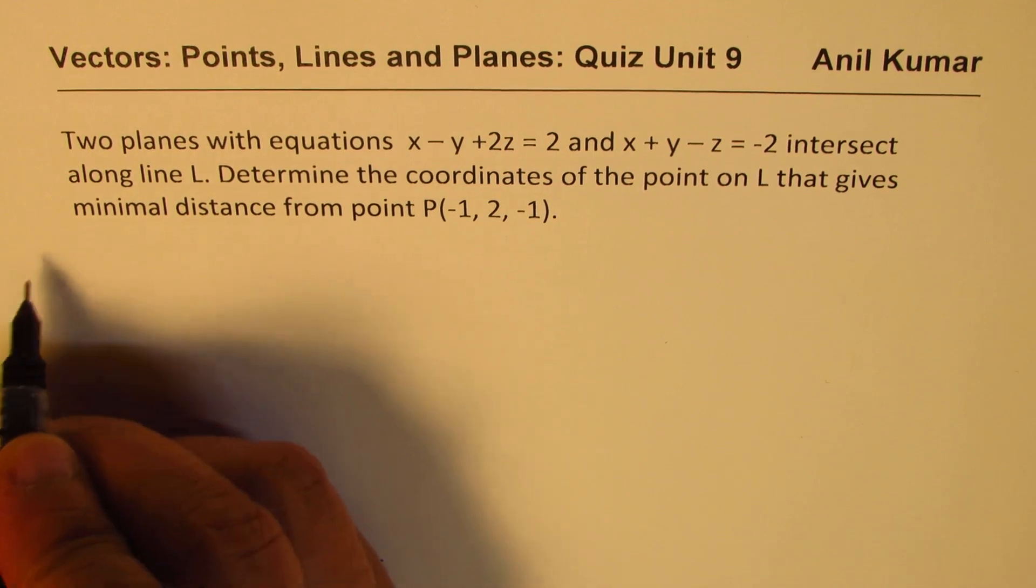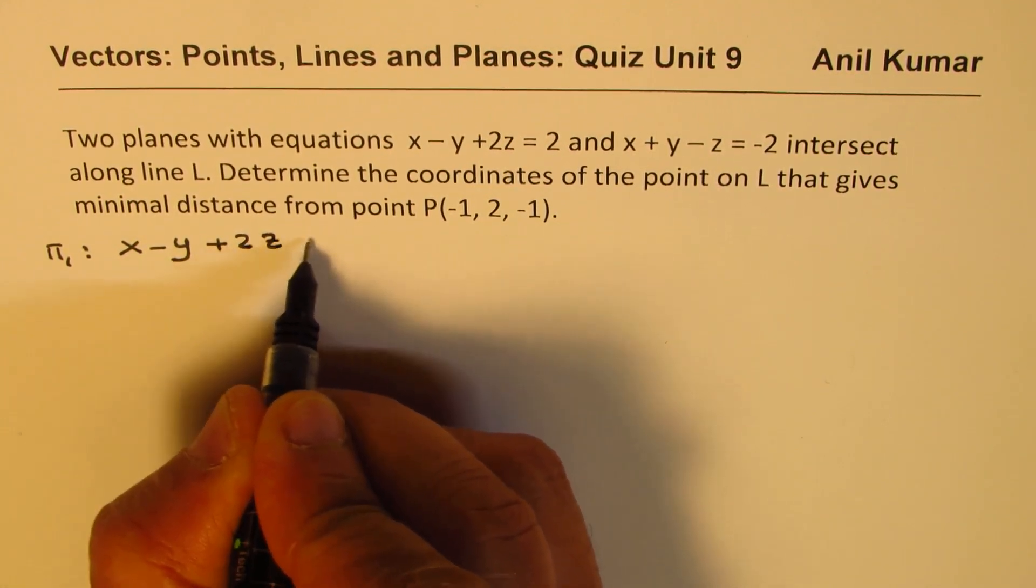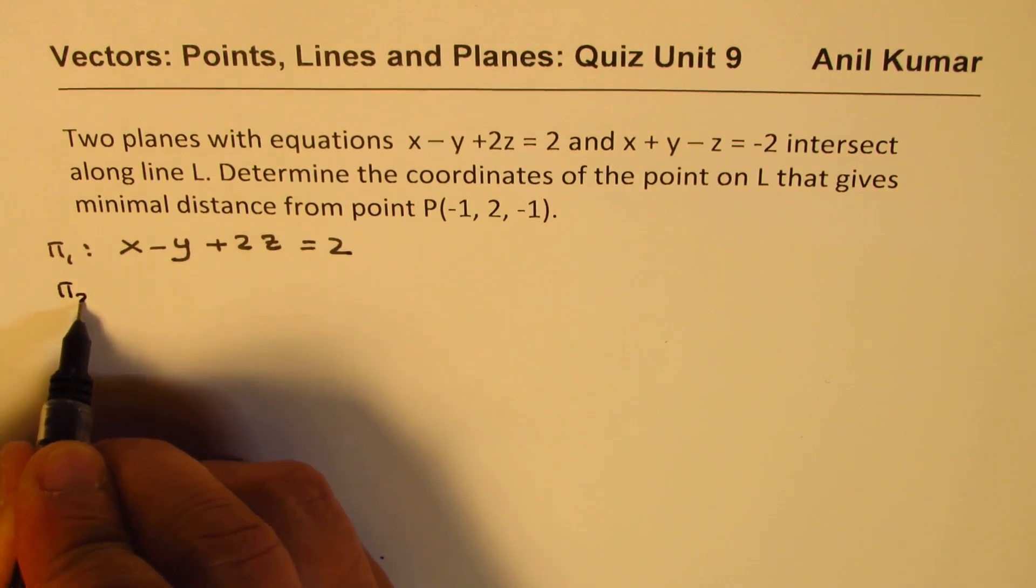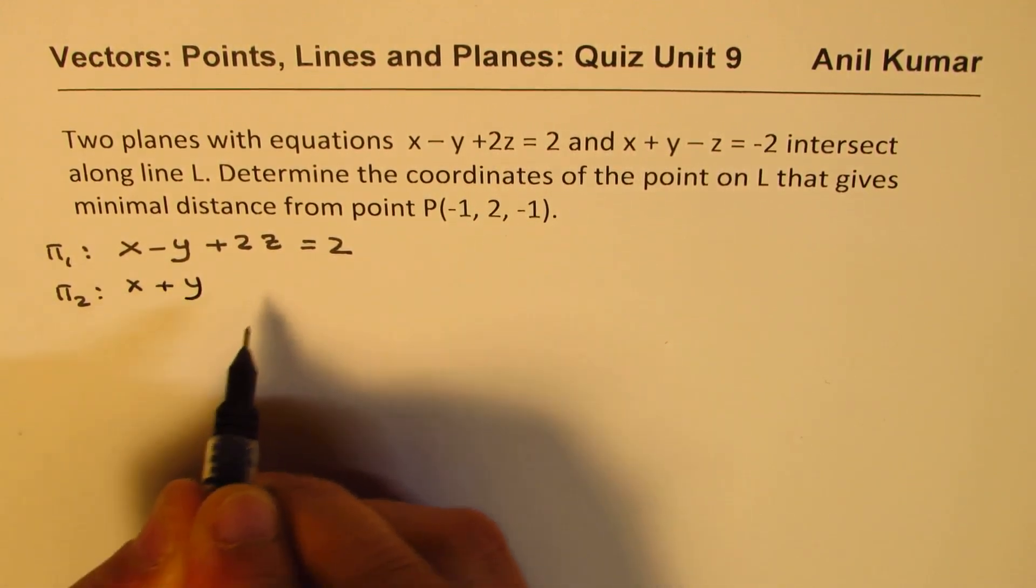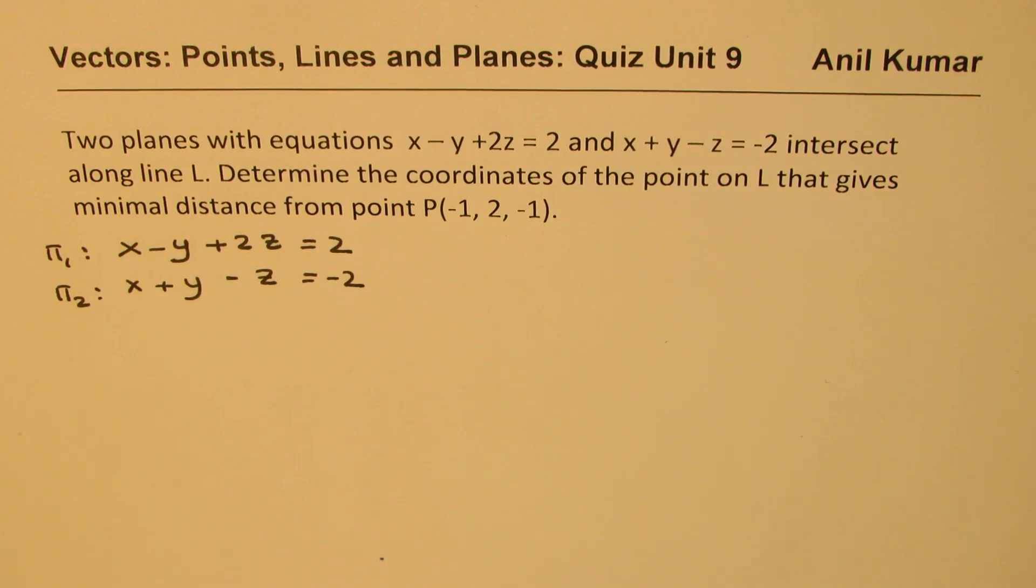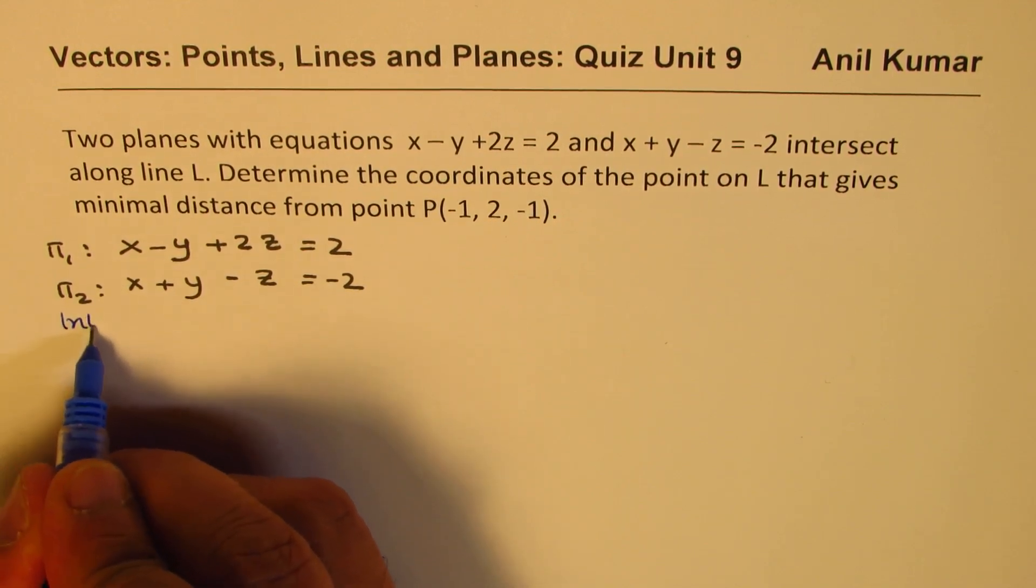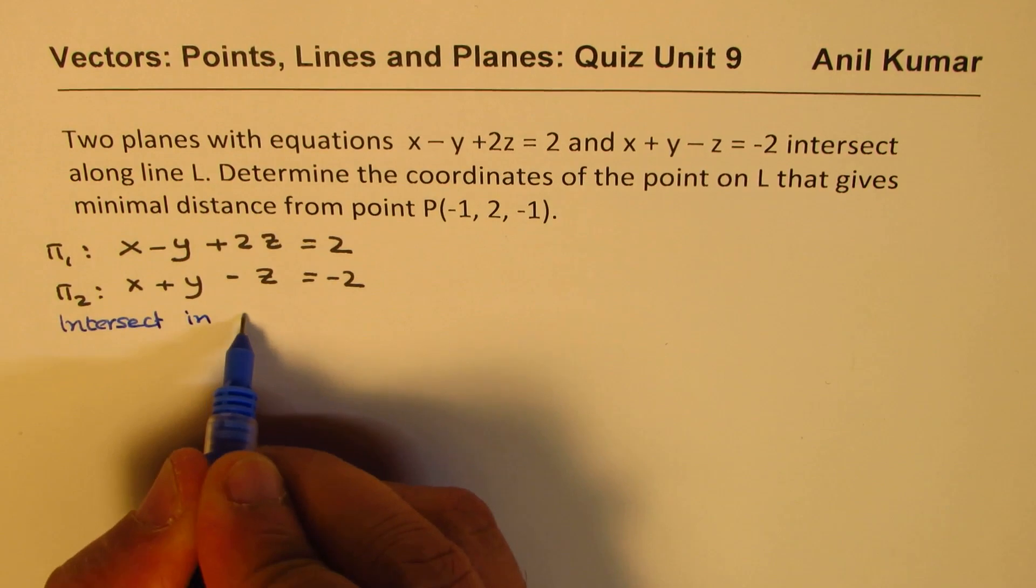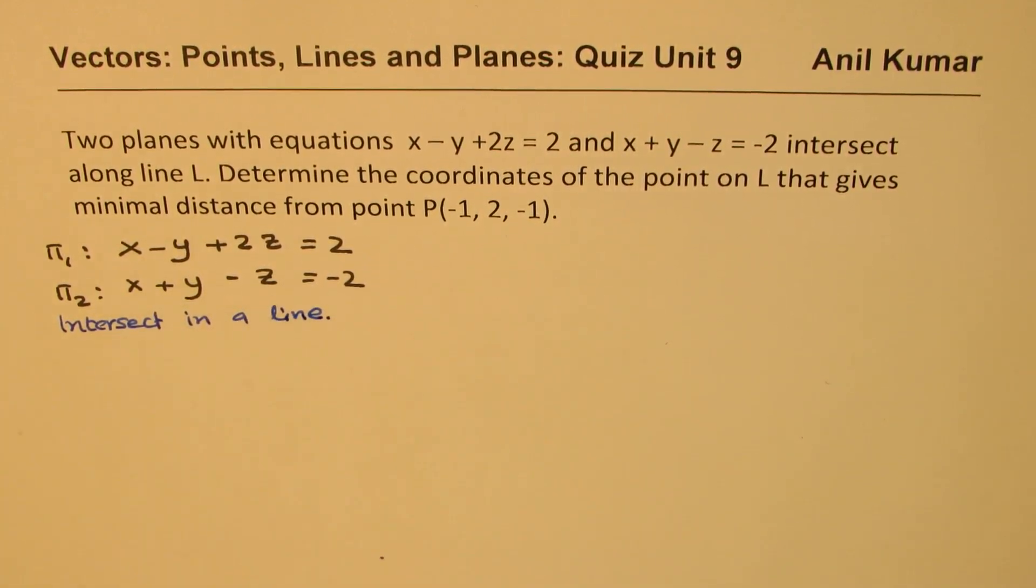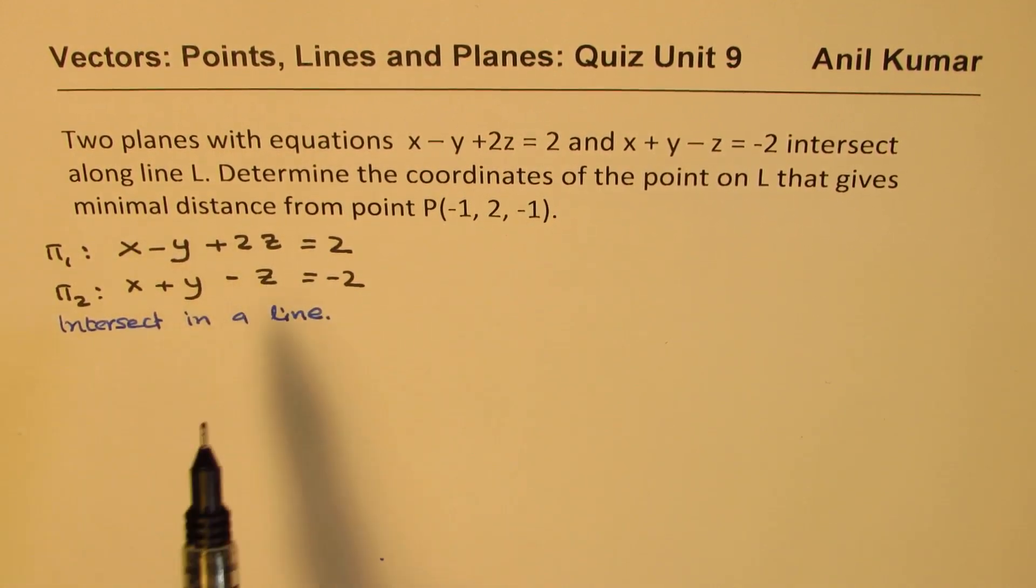So the planes are given to us. Plane 1: x minus y plus 2z equals 2. Plane 2: x plus y minus z equals minus 2. Now we need to find their intersection. As you can see, their normals are not scalar multiples so they should intersect in a line.